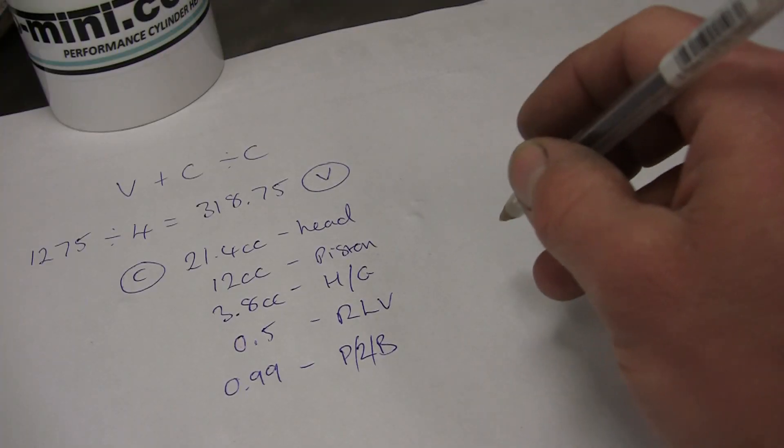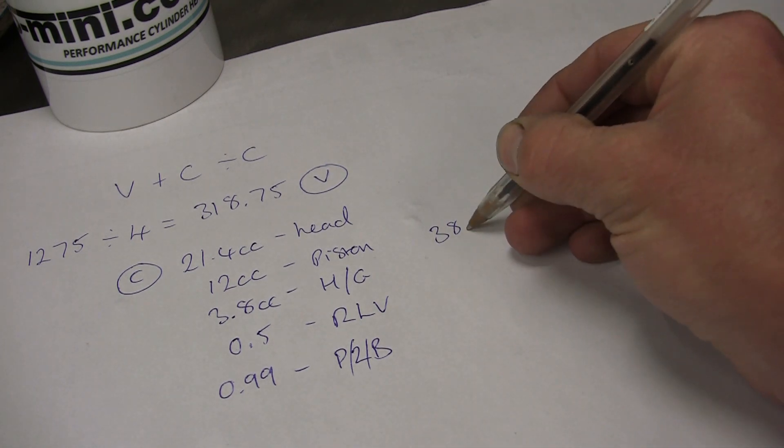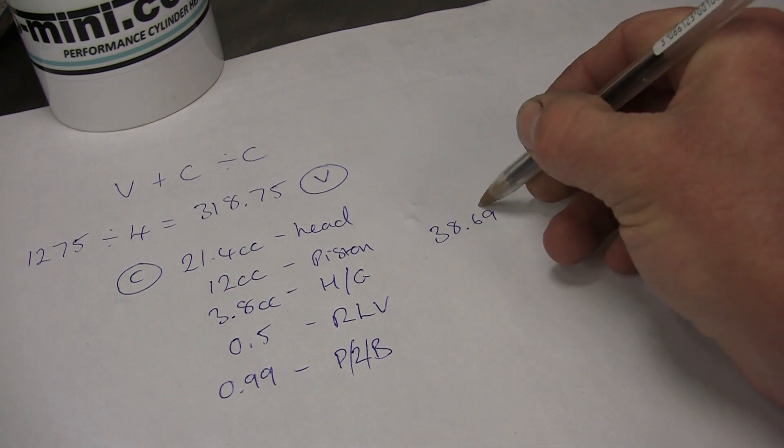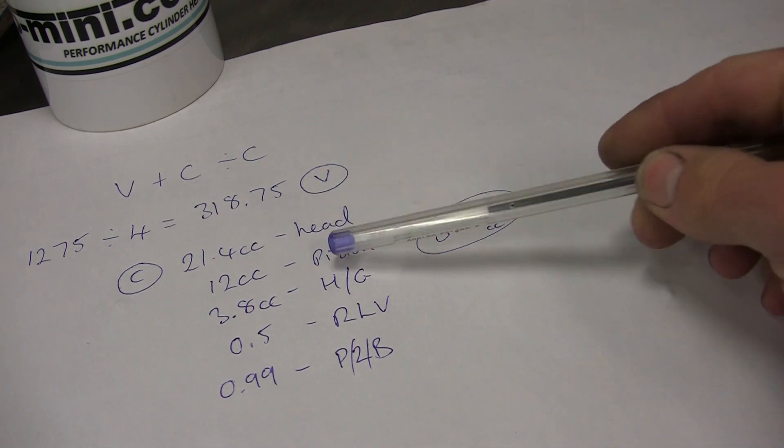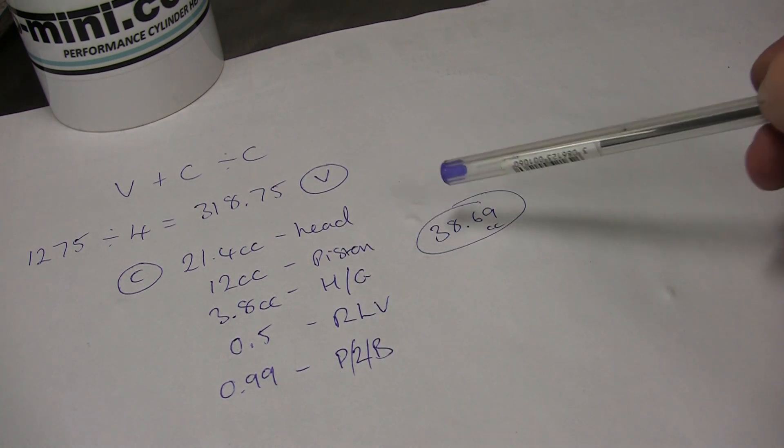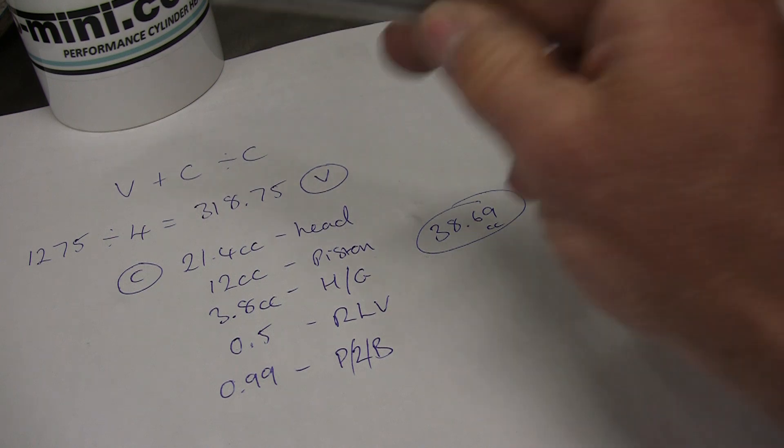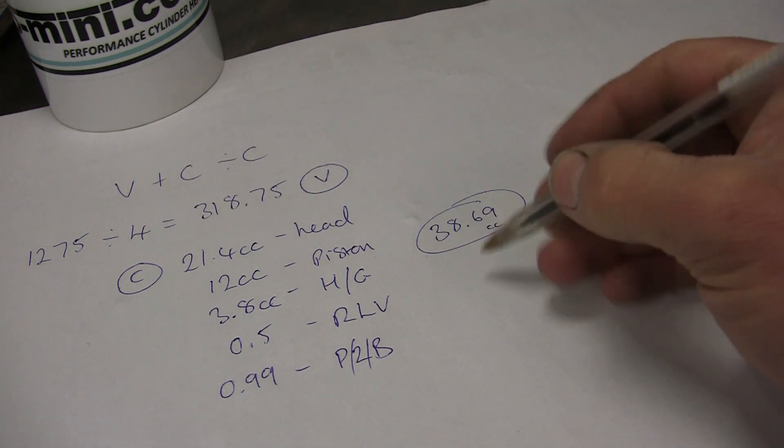If we add all those up, we get 38.69. That's 38.69 cc contained in all those areas. If we add V to C and then divide by C, it will give us the compression ratio.